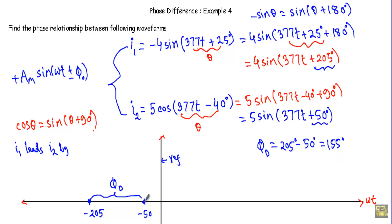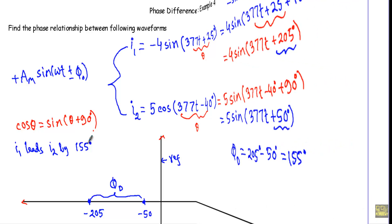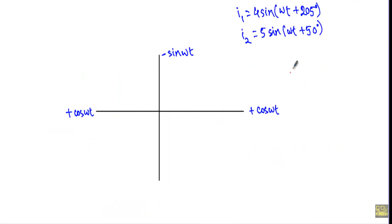That means to go from the origin of I2 to the origin of I1, we must move through 155 degrees of angular distance. Therefore, I1 leads I2 by an angle of 155 degrees.